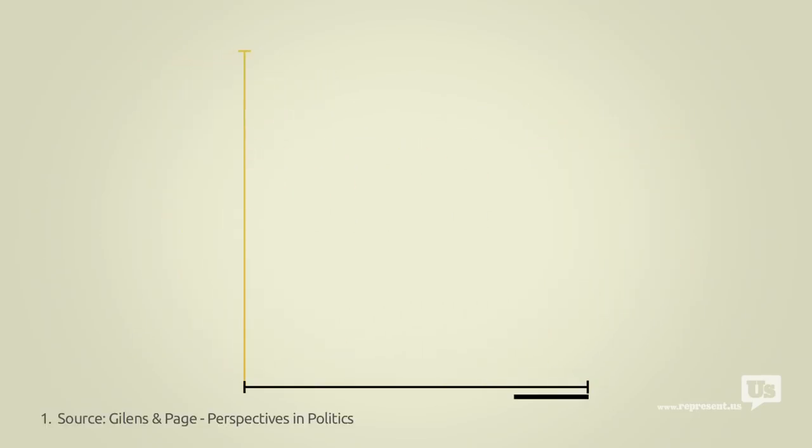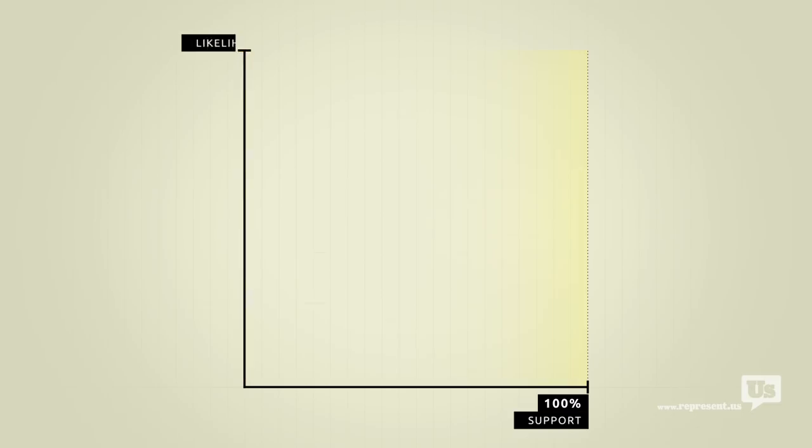This axis here represents public support for any given idea. On the left at 0% are ideas that not a single American wants. On the right at 100% are ideas that everyone supports. This axis represents the likelihood of Congress passing a law that reflects any of these ideas from a 0 to a 100% chance.